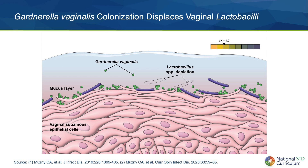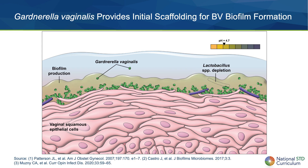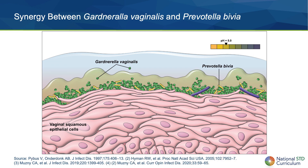These newly colonizing Gardnerella bacteria are then able to displace the protective lactobacilli and adhere to vaginal squamous epithelial cells. As the number of Gardnerella species expands, they generate a lower-level BV biofilm that allows other opportunistic bacteria to grow on the vaginal mucosa. Next, Prevotella bivia joins Gardnerella vaginalis on the vaginal epithelium in the lower layers of the BV biofilm.